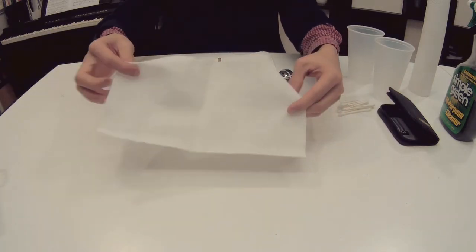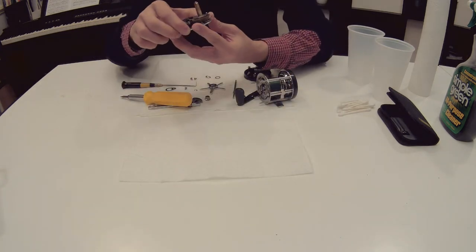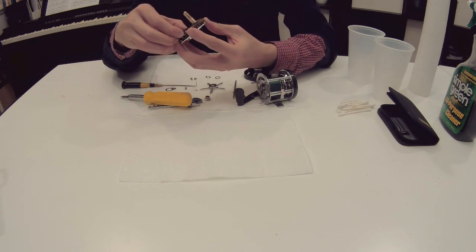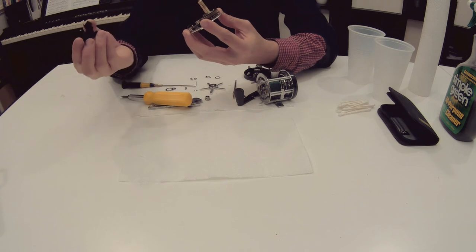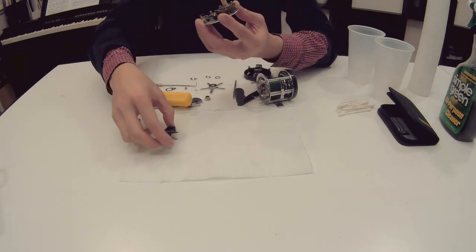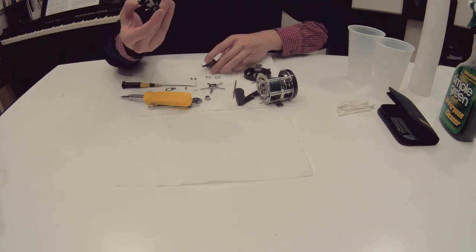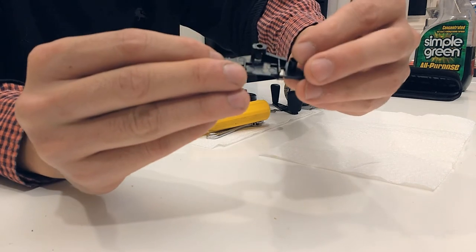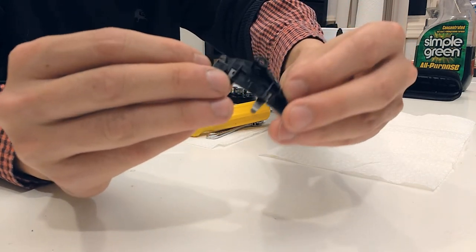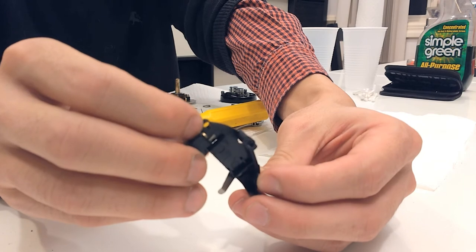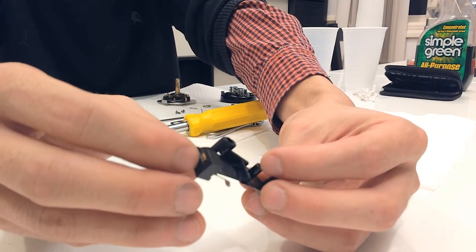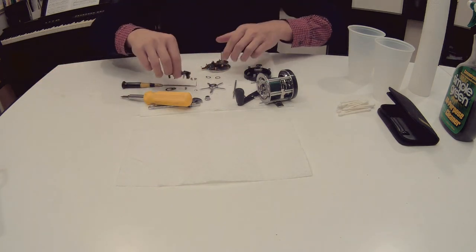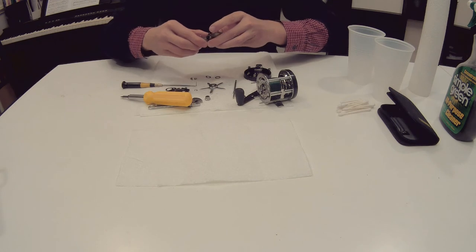So the internal part is very simple, just like the ambassador reel. Add the spring plate. Actually on the ambassador series reels, this brass part right here is actually white plastic. But on this thing, it's brass. I think brass is going to last longer than the regular plastic.